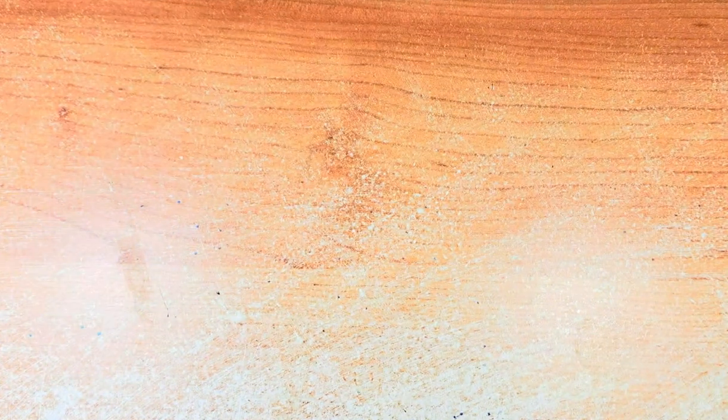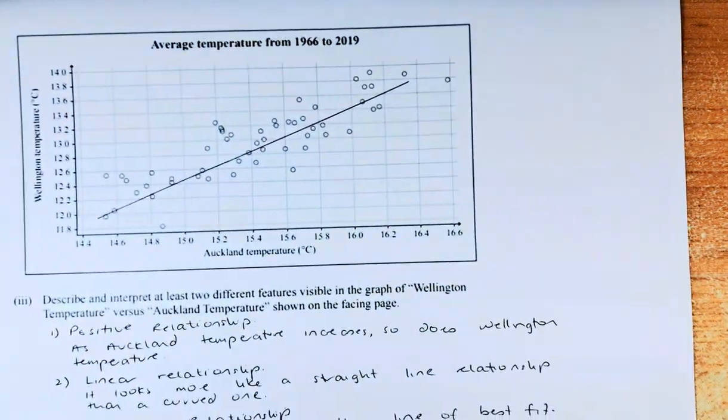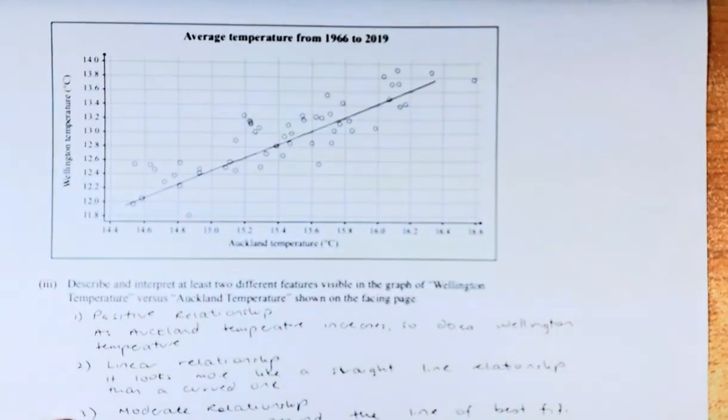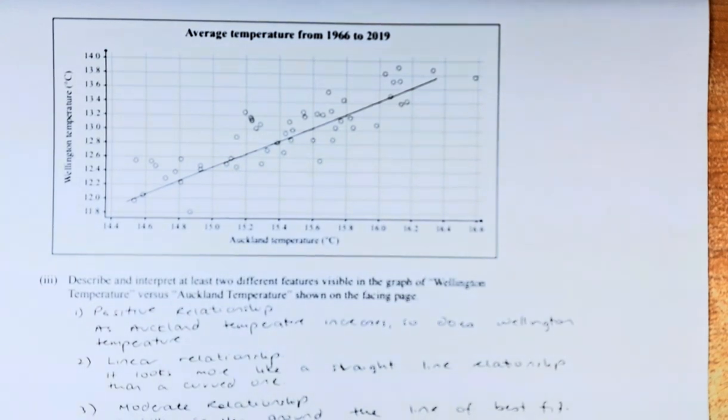Question part 3 and part 4 are word problems, so listen carefully, okay? So, describe and interpret at least 2 different features visible in this graph, okay? Shown on the video here. So, we need to talk about the... When you do a scatter graph, you need to talk about the relationship. There are 3 types of analysis you must make.